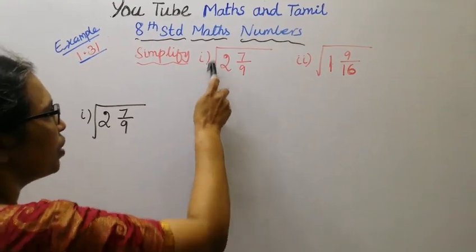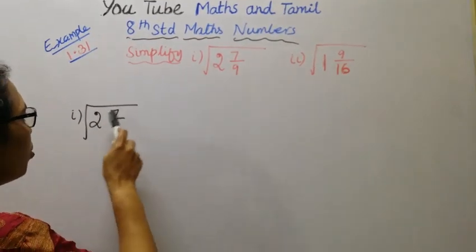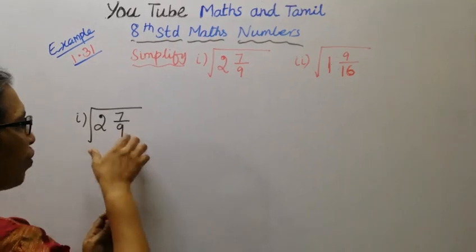Simplify first subdivision: square root of 2 7/9. This is a mixed fraction.